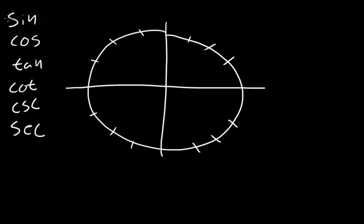The values they're going to be asking for — the primary ones — are sine, cosine, tangent, cotangent, cosecant, and secant. The two primary ones that create all the others are sine and cosine. So if you can find these two, after that you no longer need the unit circle, and it's just some simple algebra to find the other four values.